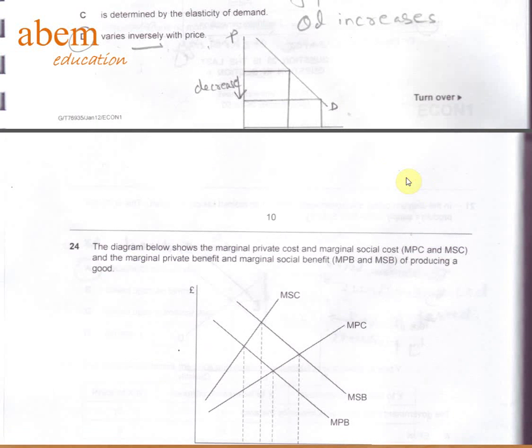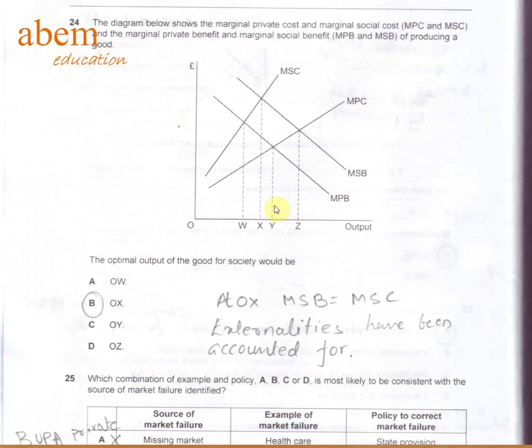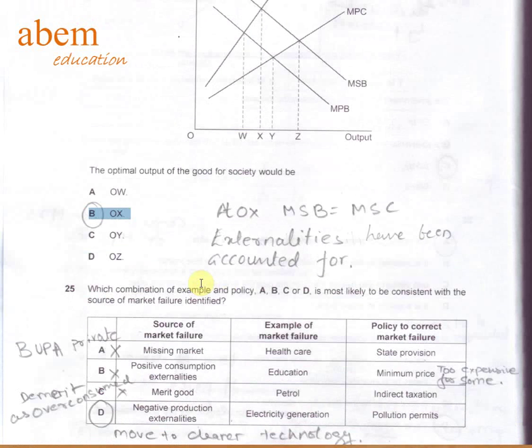In question number 24, at the point OX, we know MSC is equal to MSP. So externalities have been accounted for. It's the optimal point of production. So B is the answer.